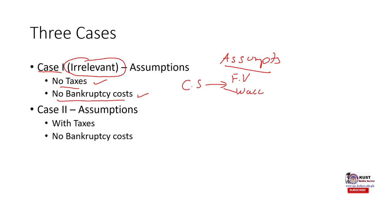In case two, we relax the assumption of taxes. We now assume that there are taxes — which in the real world there are — but we still keep the no-bankruptcy assumption intact. We want to see in this case what is the impact of capital structure on firm value and weighted average cost of capital, given taxes but no bankruptcy cost.